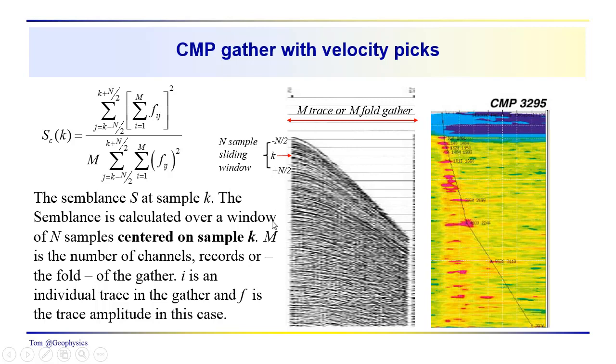So m really refers to the number of channels, the number of records that you actually have, or to the fold, and get used to this word fold, because it's often used to refer to the number of traces, the redundancy.